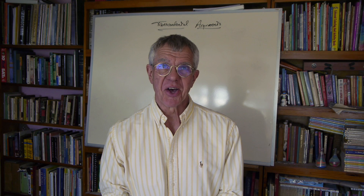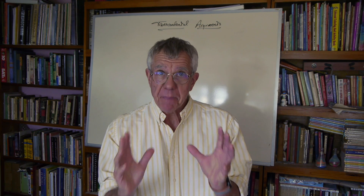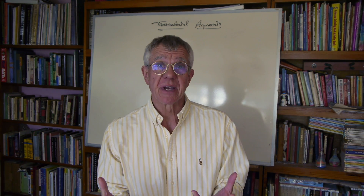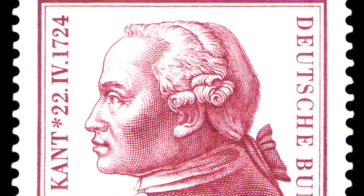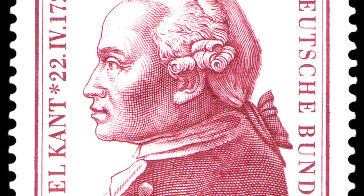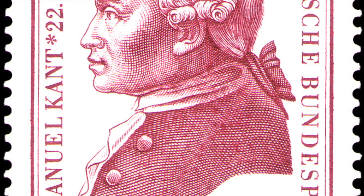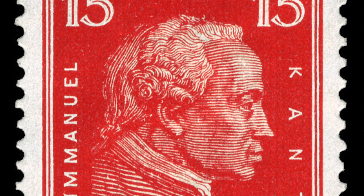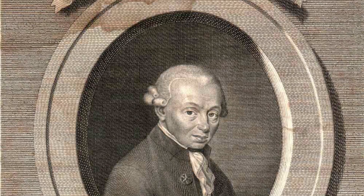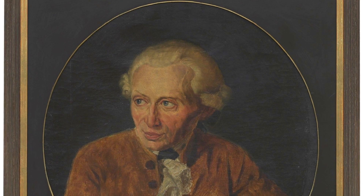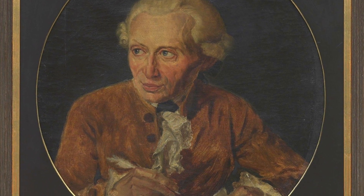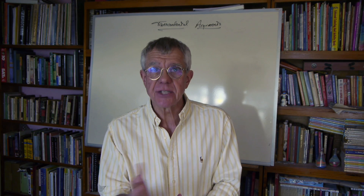Today, our topic is Transcendental Arguments. It's a very special kind of argument, one first found in the work of Immanuel Kant, who writes The Critique of Pure Reason and includes within it a big section called the Transcendental Deduction. In the first edition, it takes one form; it takes a second form in the second edition, where he almost completely rewrites the argument. It is the critical argument of the work, and you can find it in all sorts of places in the history of philosophy.